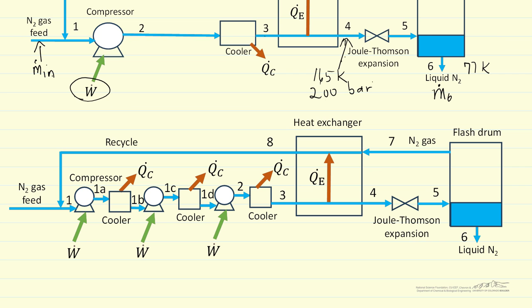So here I've shown three compressors where, for example, we go from one bar to five bar in the first compressor, and we remove heat back to room temperature. Go from five bar to 25 bar in the second compressor, and remove heat. In this case, we'll go from 25 bar to 200 bar in the third compressor.